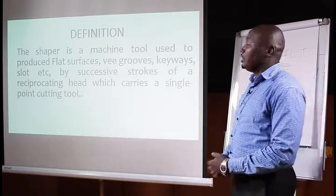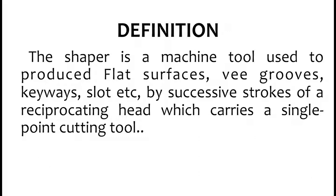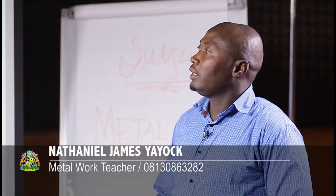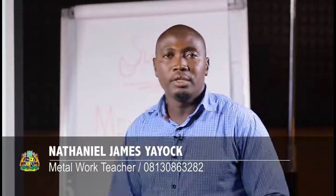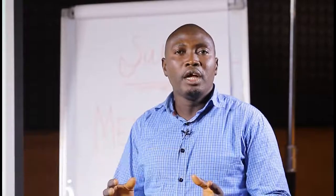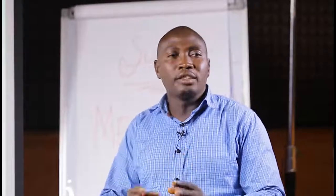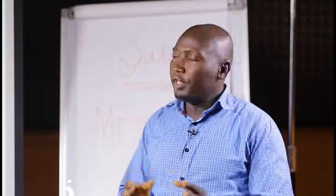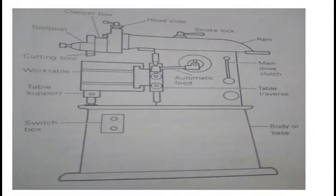The shaping machine is a machine tool used to produce flat surfaces, V-grooves, keyways, slots, etc., by a successive stroke of a reciprocating head which carries a single point cutting tool. When we are talking about a shaping machine in mechanical engineering or metalwork, we are basically referring to that machine that shapes or gives us the shape we require — as slots, V-grooves, and keyways. When we look at the screen, we have the structure of what we refer to as the shaping machine.